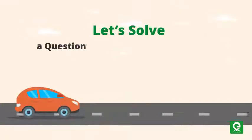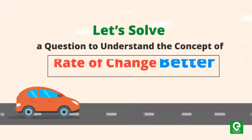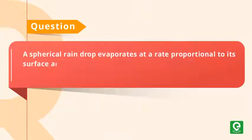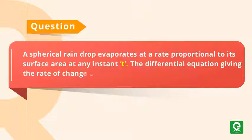Let's solve a question to understand the concept of rate of change better. Question: A spherical raindrop evaporates at a rate proportional to its surface area. At any instant t, find the differential equation giving the rate of change of the radius of the raindrop. This question was asked in the IIT-JEE 1997 exam.